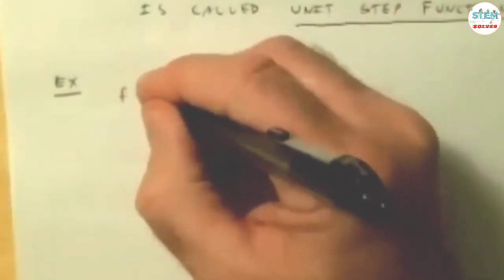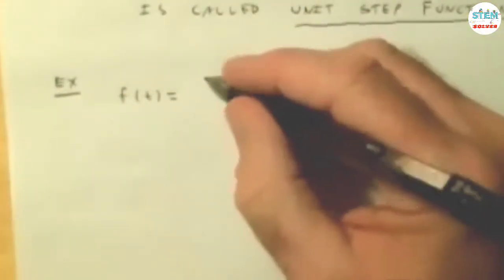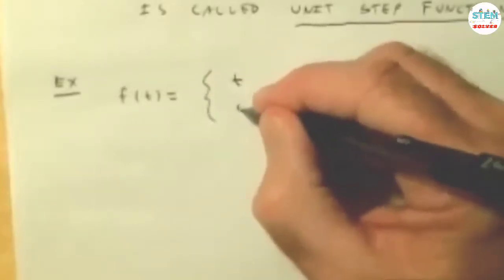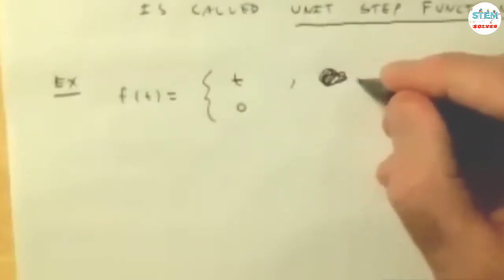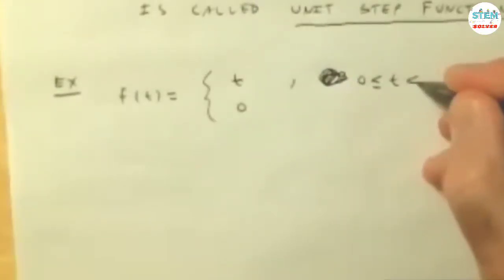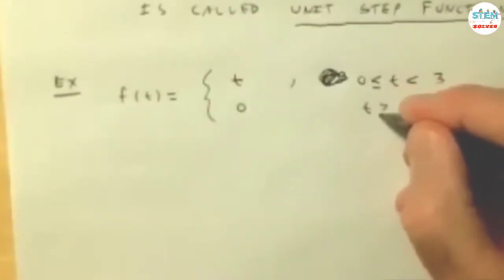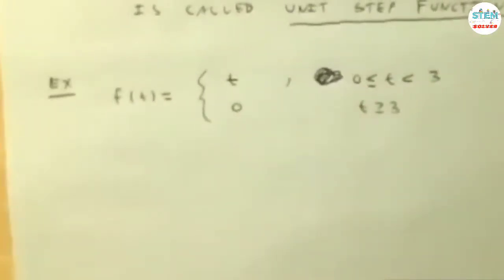So let's say that we have a function like this, very simple to begin with. This is when t is between 0 and let's say 3, and when t is greater than or equal to 3.